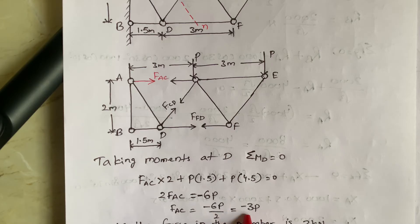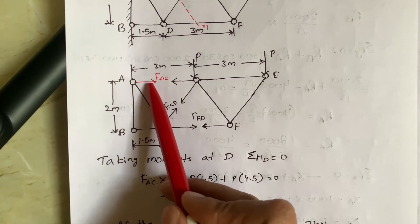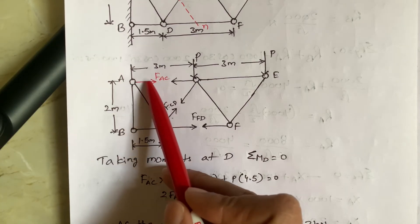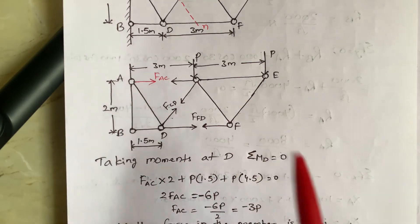So minus 3P is nothing but the force in the member FAC, which we assumed as tension. So which is away from this joint. So our assumption is correct. Minus is away from the joint.